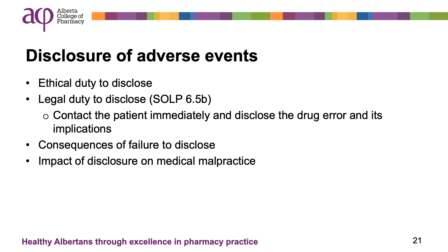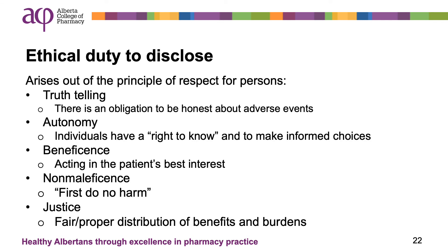Disclosure is a crucial part of the process. Patients have a right to know when an error has occurred and what the potential health consequences might be. From a legal perspective, there are severe consequences when it is later determined that healthcare providers were aware of an error and chose not to disclose this to the patient. Disclosure to the patient is therefore a requirement as per SOLP 6.5. The duty to disclose arises out of five ethical principles: truth telling — there is an obligation to be honest about drug errors; autonomy — patients have a right to know so they can make informed choices; beneficence — pharmacists and pharmacy technicians must act in the patient's best interests; non-maleficence — pharmacists and pharmacy technicians must do no harm, which relates to the responsibility to implement changes or preventative measures to ensure repeat drug errors are avoided, as per SOLP 6.7.